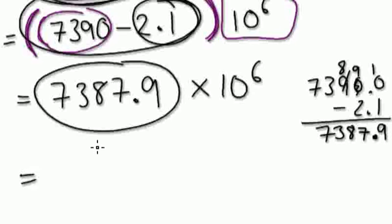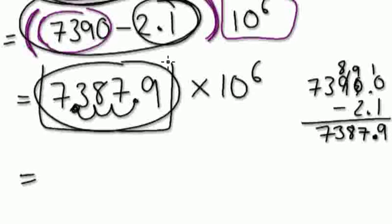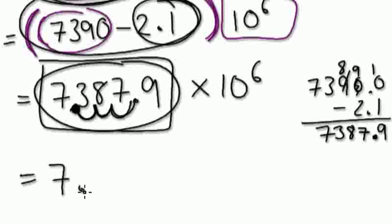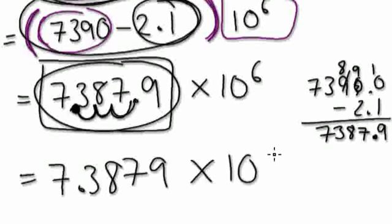Now, let's tidy up into standard form — 1, 2, 3. Standard form: this number, the first number, has to be between 1 and 10 (and it's allowed to be 1 as well). So here we've got to move it 1, 2, 3. So it would be 7.3879 times 10 to the power of 9.